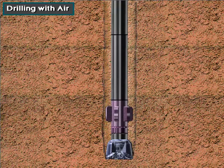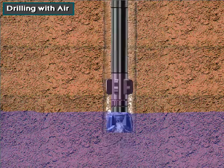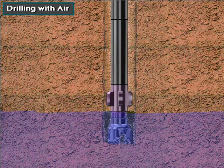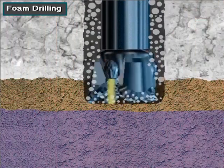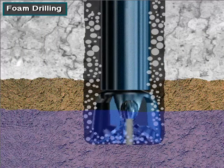Downhole conditions have to be just right for air or gas to be usable. For example, the bit cannot drill through formations containing large amounts of water, as the water mixes with the cuttings in the air or gas and clogs up the hole. If small amounts of water are present in the formations being drilled, special equipment can inject a foaming agent into the airstream. The foam helps separate the cuttings and remove water from the hole.